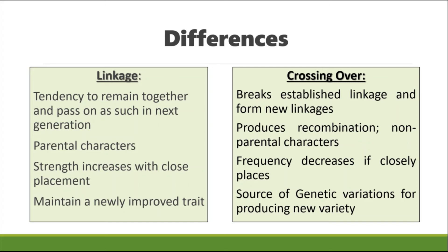In terms of differences: with linkage, genes tend to remain together and pass to the next generation as a single unit, producing offspring more or less like the parental characters. With crossing over, that compactness is broken down, new linkages form, and recombinants are produced that differ from parental characters. The strength of linkage increases with closer gene placement, while crossing over frequency decreases when genes are very closely placed. Linkage maintains improved traits across generations, while crossing over is a source of new genetic variation.